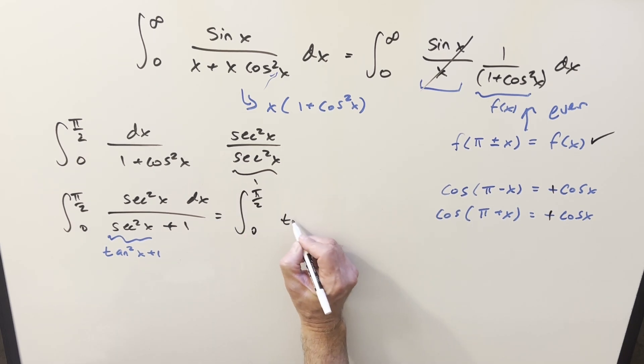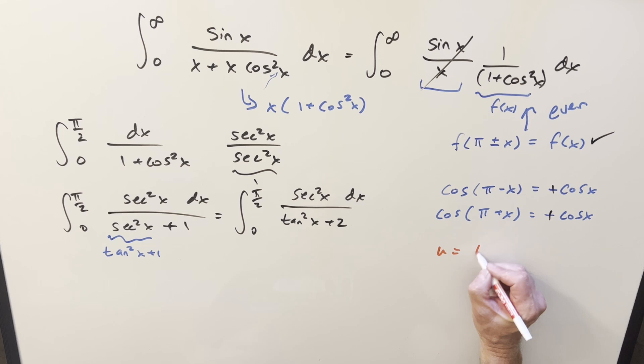So we're going to have now this becomes tan squared x plus two in the denominator, and we have our secant squared here. Do a quick u sub on it. u is going to be equal to tan of x. Our du is going to be just secant squared x dx.